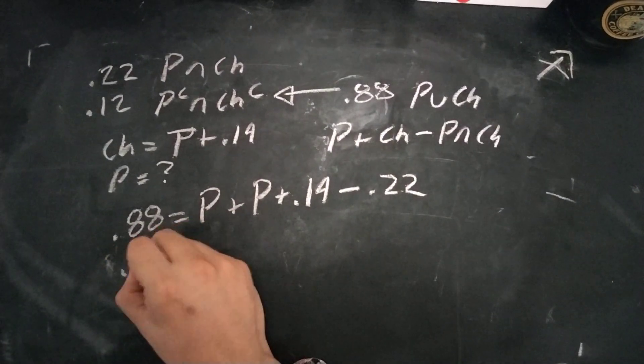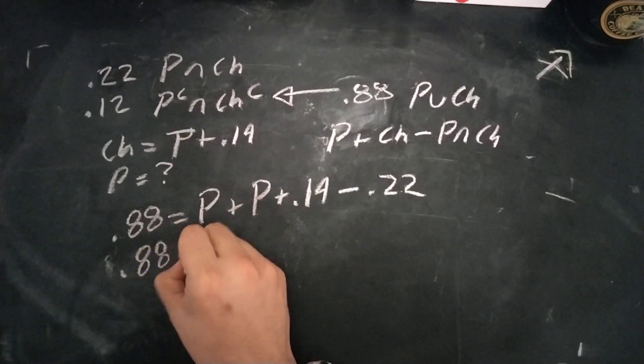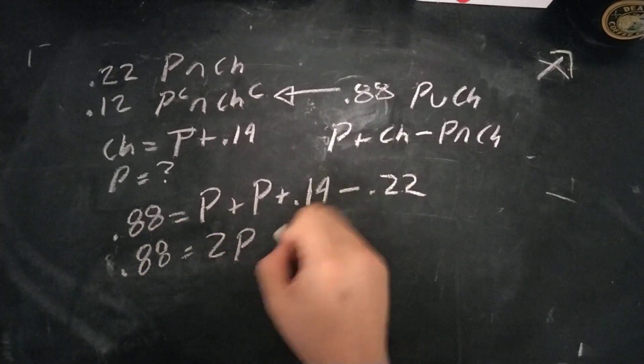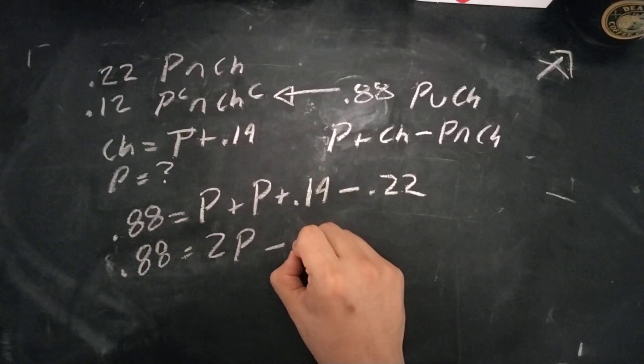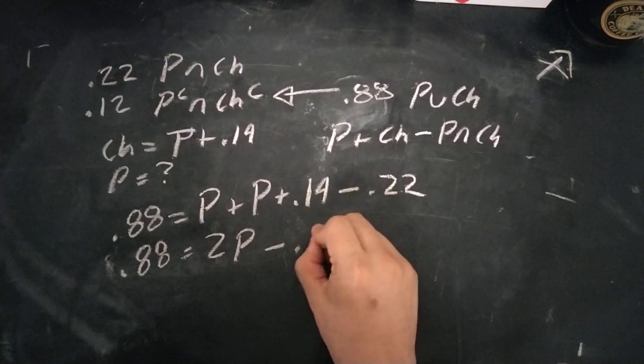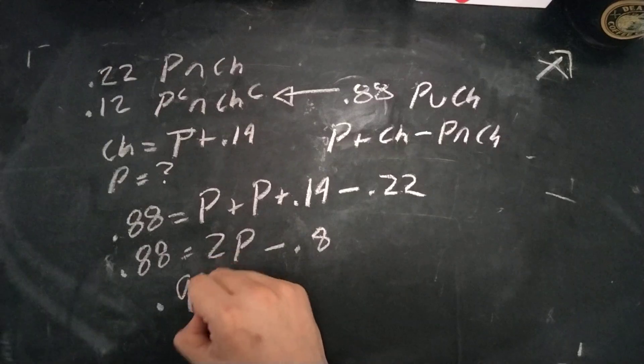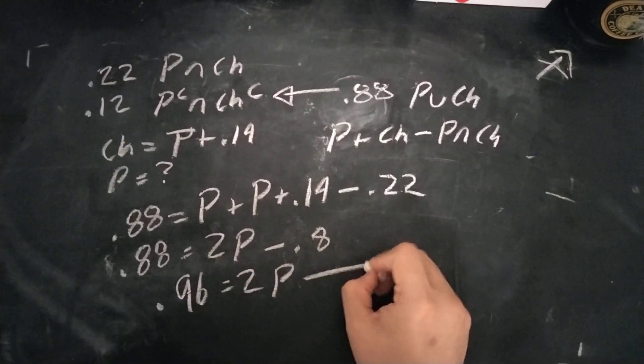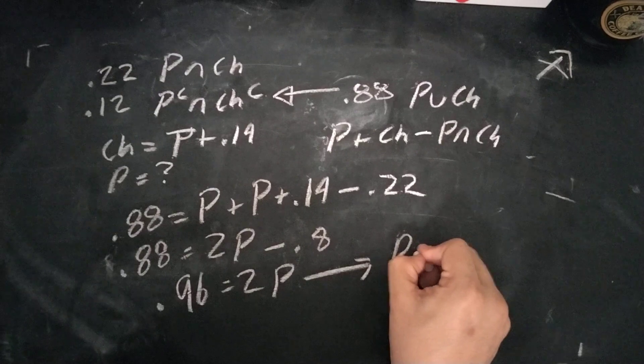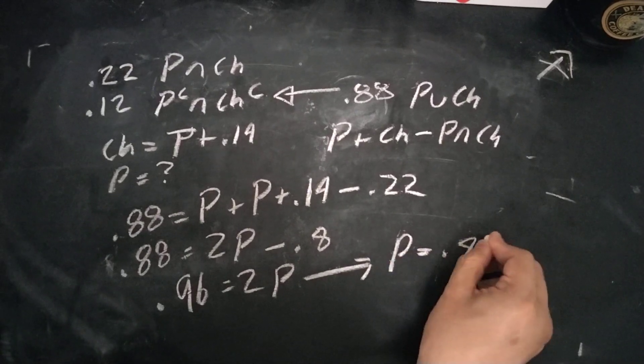So then we can go further down, this is 0.88 is equal to 2P minus 0.8. This is 0.96 is equal to 2P, which implies that P is just equal to 0.48.